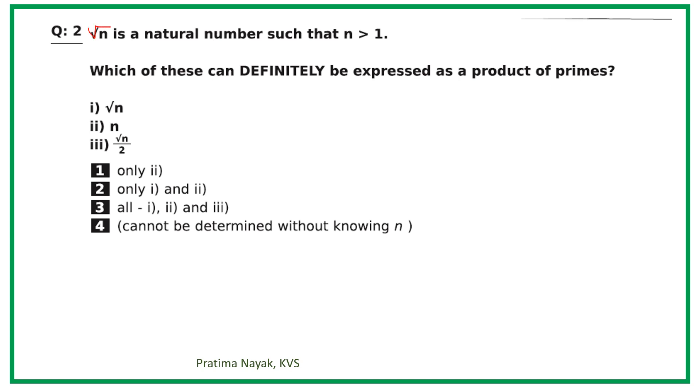Let us read the question very carefully. Given: √n is a natural number such that n > 1. Which of the following can definitely be expressed as a product of primes? i) √n, ii) n, iii) √n/2. The answer options are: 1) only ii is correct, 2) only i and ii are correct, 3) all i, ii, and iii are correct, 4) cannot be determined without knowing n.